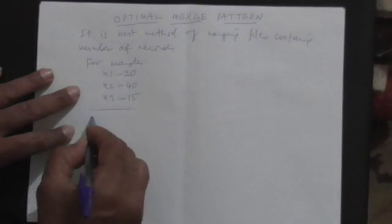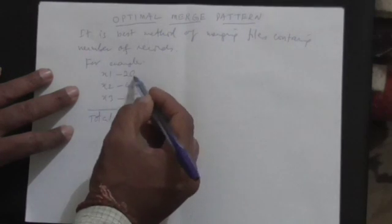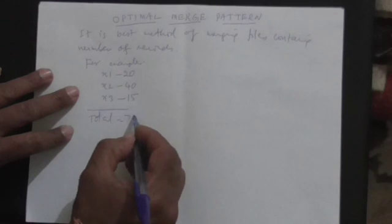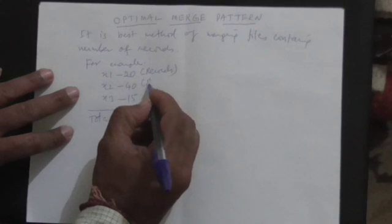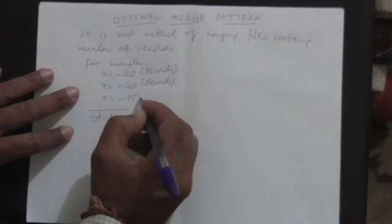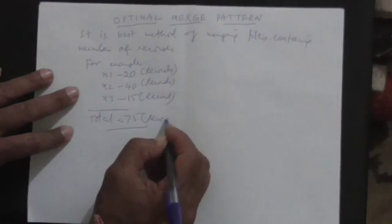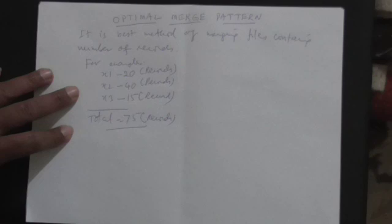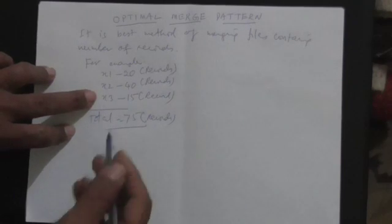If you merge all these files, the total number of records will be 75. But the question is, how best you can merge them so that the total number of merges will be less. There are three possibilities here because there are three files, and at a time you can merge two files.